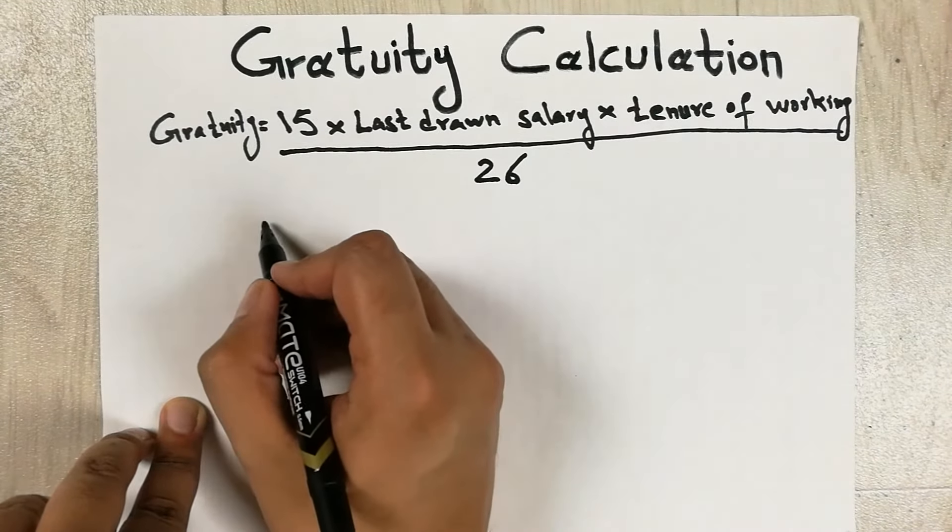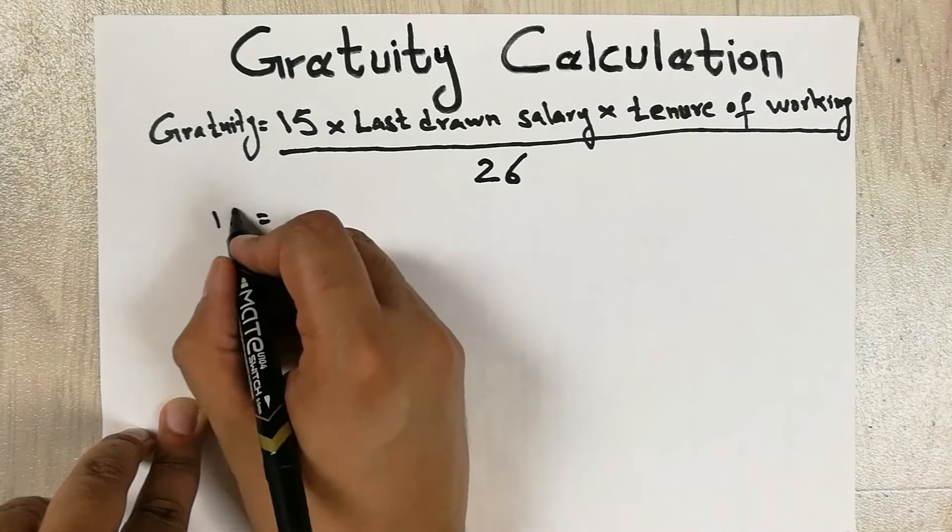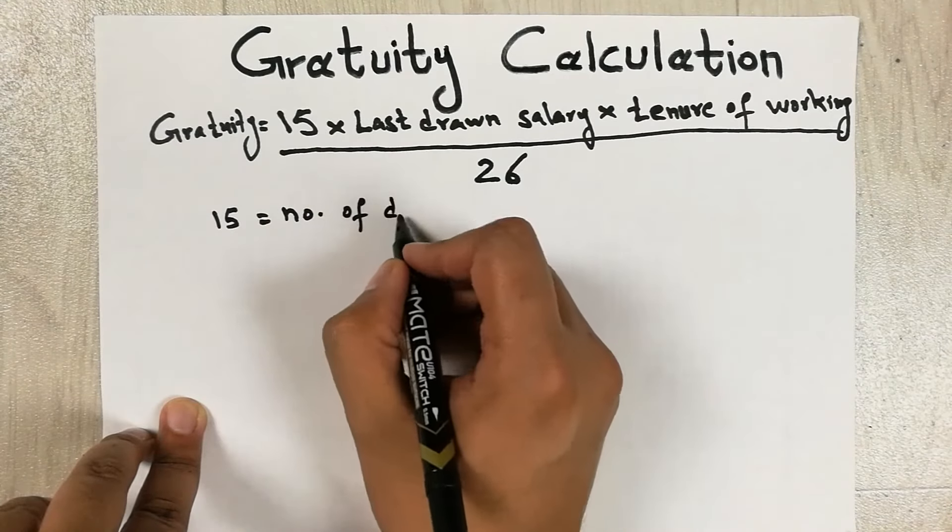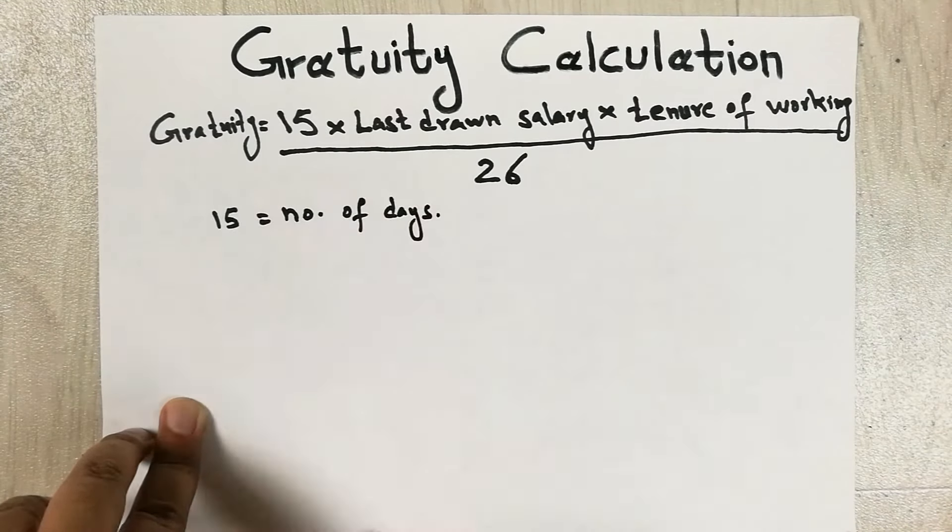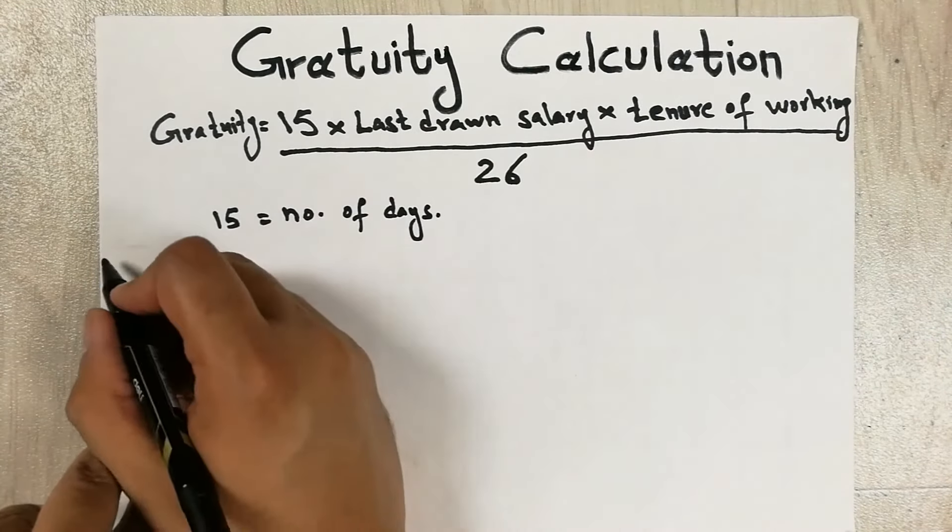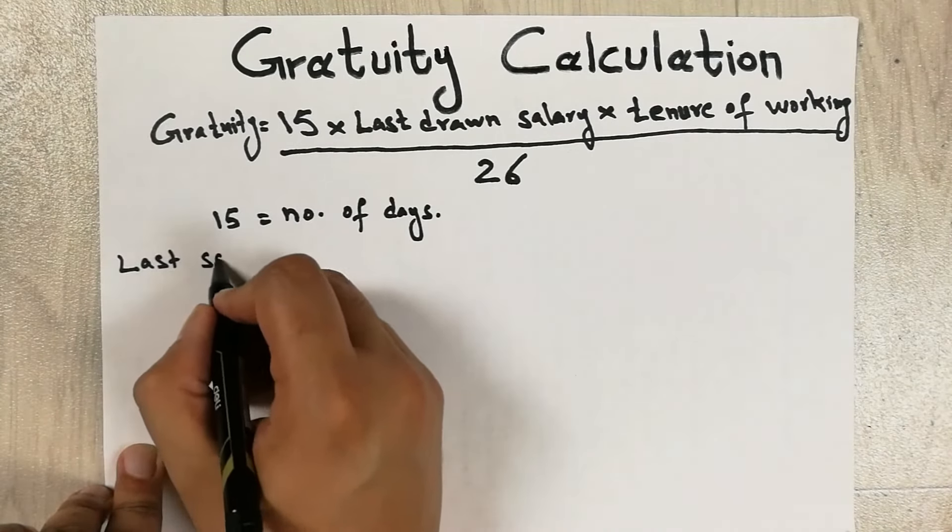So first start with 15. So guys, 15 is the number of days that you get gratuity for, and this is according to 1972 Act. And then last drawn salary. I will write it: last salary.